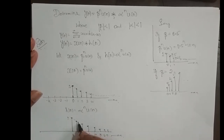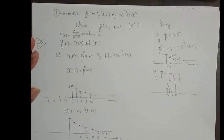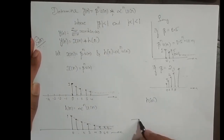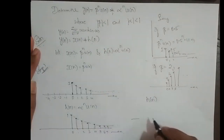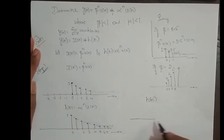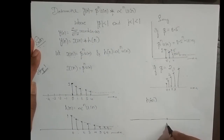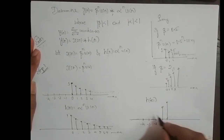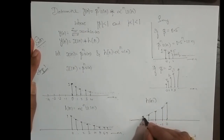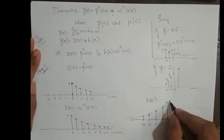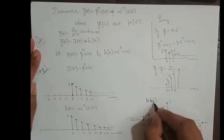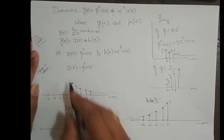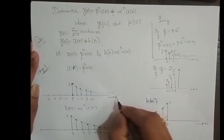Now, what we need is h[−n]. Step 1 of the solution: if this is h[n], what is h[−n]? It is the mirror image. So it starts from 0 and goes toward minus infinity — that is h[−n]. Now we replace the independent variable n with k: x[n] becomes x[k] and h[−n] becomes h[−k], both expressed on the k-axis.